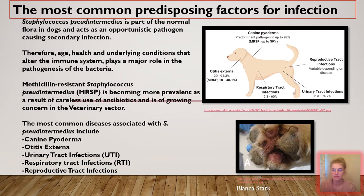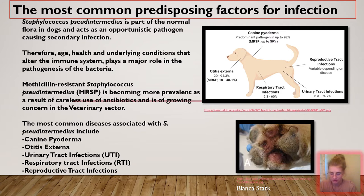Staphylococcus pseudintermedius is part of the normal flora in dogs and acts as an opportunistic pathogen when the immune system is compromised. The anal, perineal, and nasal regions are the main colonization areas of this bacteria, from where it is then transmitted to other body sites, leading to secondary infections.